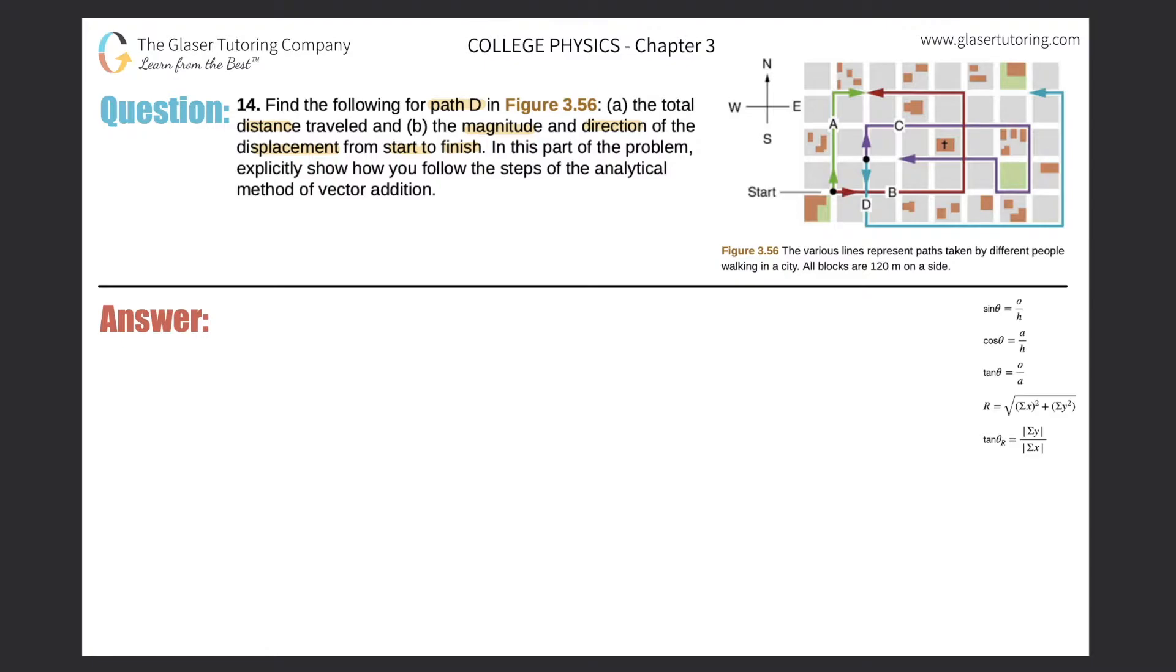So first let's calculate the distance. Remember the distance is the actual ground traveled. So let's highlight path D. Path D is here in light blue, starting at this particular location at the black dot, and it looks like it's ending at this location. Pretend that you're in your car and you're driving this path. What would your odometer read? That's the distance. So if we start here and we travel this way, we travel two blocks down. Remember, each block is 120 meters, so therefore I would have traveled 240.